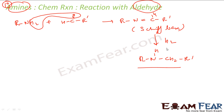If you add hydrogen it becomes R-NH-CH2-R', which is the secondary amine. So this reaction of amine with aldehyde is only for the primary amine because you should have two hydrogens. Whatever product you get — the Schiff base — you can do reduction to convert it to a secondary amine.